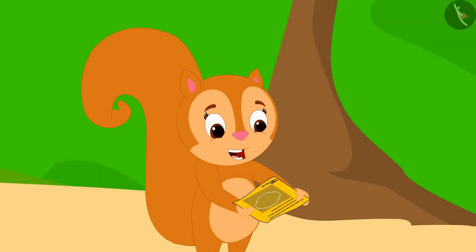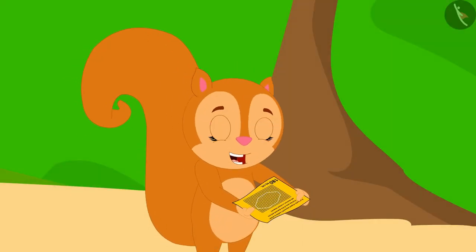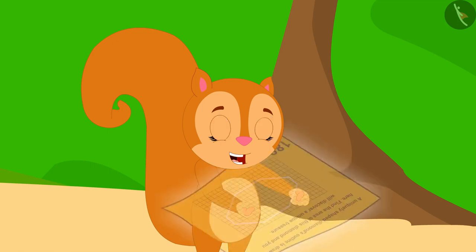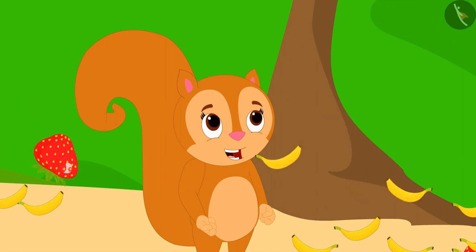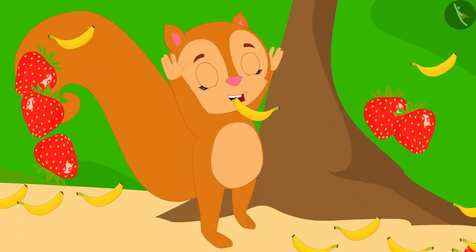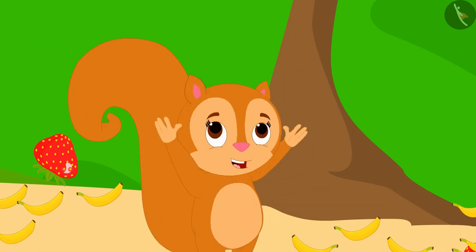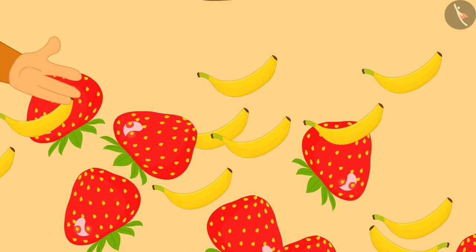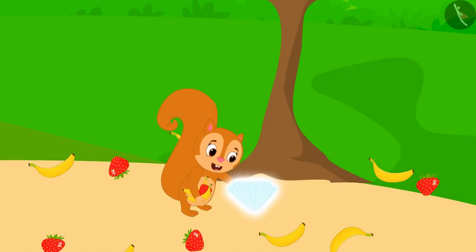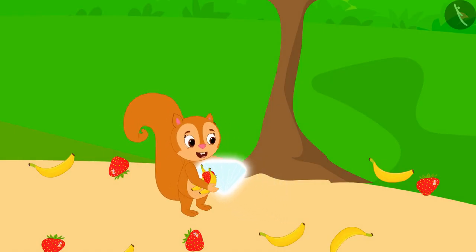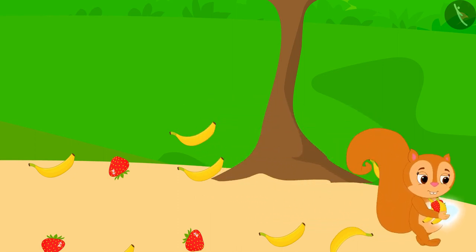As soon as Chanda wrote this answer on the paper, the paper disappeared and fruits began to shower from the sky. Chanda became very happy. She gathered some fruits, took her diamond, and happily walked towards her house.